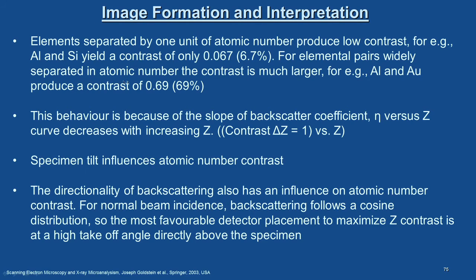Element pairs widely separated in atomic number produce much larger contrast. For example, aluminium and gold produce a contrast of 0.69, that is 69%. This is because the slope of the backscatter coefficient η versus Z curve decreases with increasing atomic number — the plot of η against Z shows that the slope of η changes significantly. Additionally, specimen tilt influences atomic number contrast, as does the directionality of backscattering.